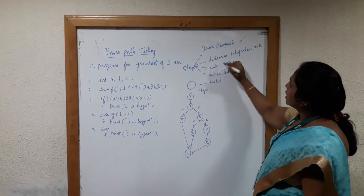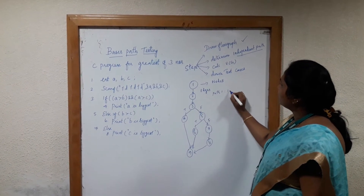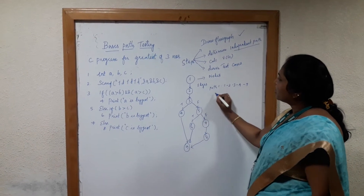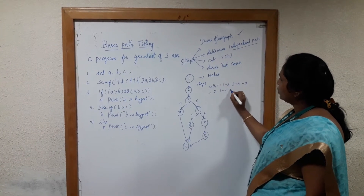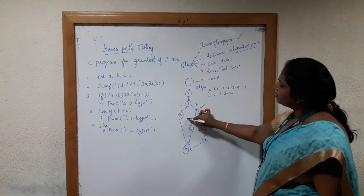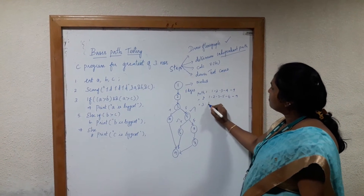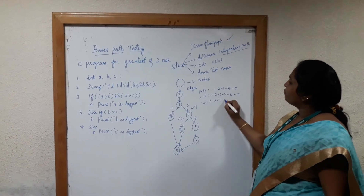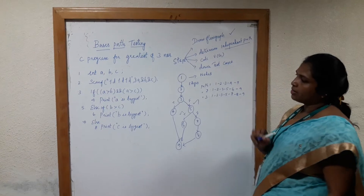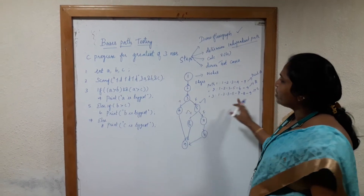The second step is to determine the independent paths. Path 1: start at node 1, move to 2, 3; if condition is true go to 4, print A is biggest, come to end. Path 2: start at node 1, 2, 3; if condition is false move to node 5; assume condition is true, move to node 6, print B is biggest, come to end. Path 3: start at node 1, 2, 3, 5; if condition is false move to node 7, print C is biggest, come to end. So path 1 prints A as biggest, path 2 prints B, path 3 prints C. For this scenario we have three independent paths.